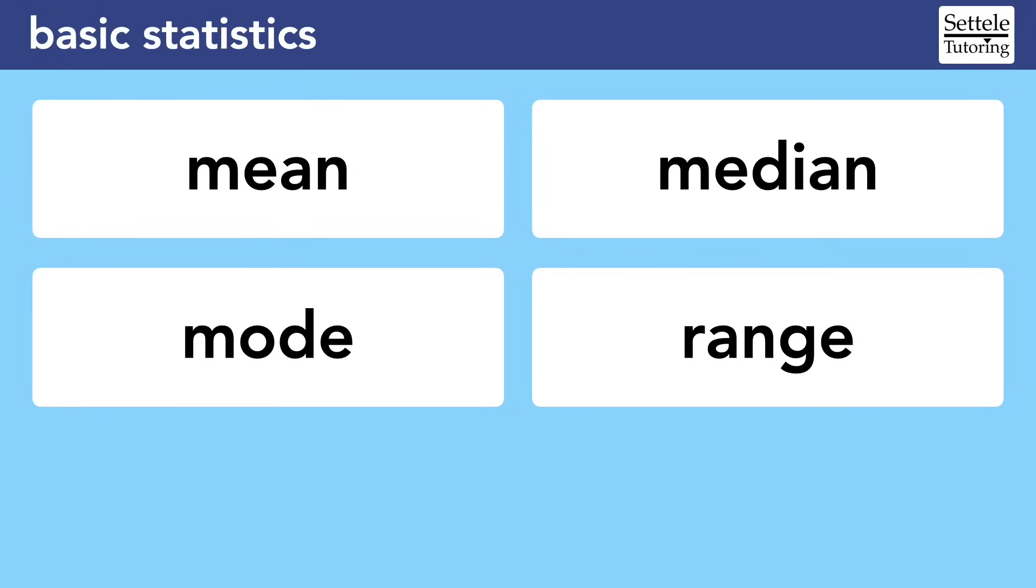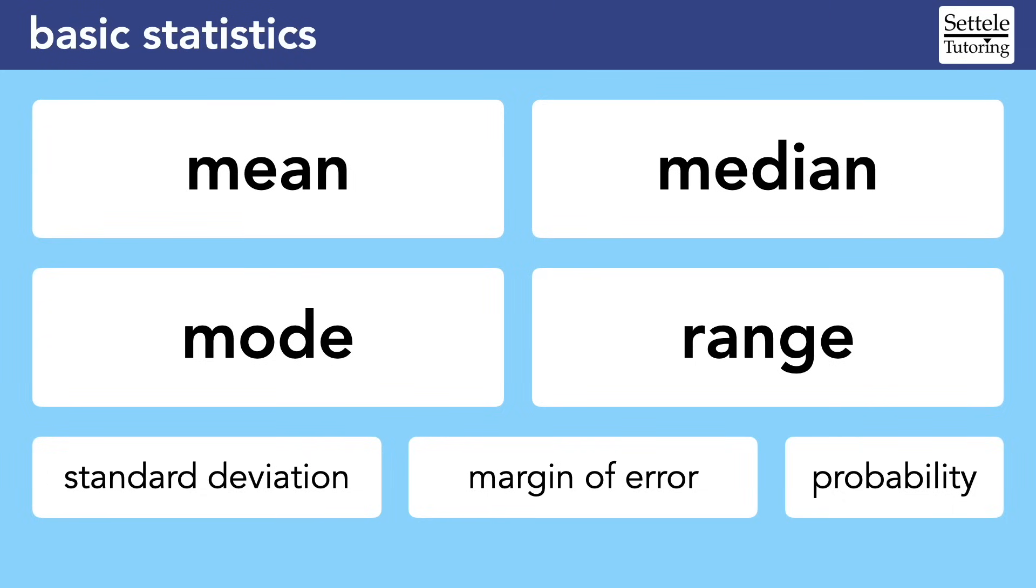There are a few other concepts that could come up, like standard deviation, margin of error, and probability, but these are rare. Since most people have learned mean, median, mode, and range at some point in middle school, we'll stick to those four ideas in this lesson on basic statistics. I have separate lessons on the other statistics topics, so make sure you subscribe to the Satell Tutoring channel for the full set of SAT statistics lessons.